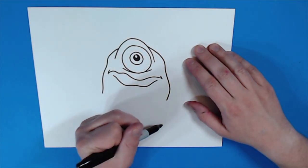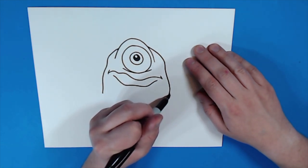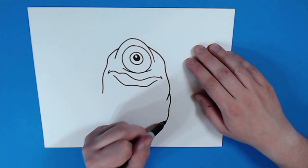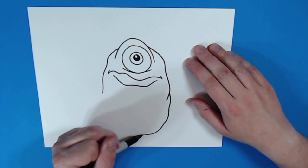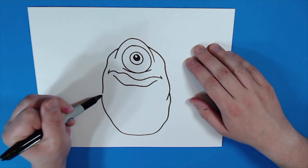And then, I want to connect this together. So, instead of starting right here, I'm going to start up here. And I'm going to just make this kind of wavy, curvy line shape that comes all the way over to here.